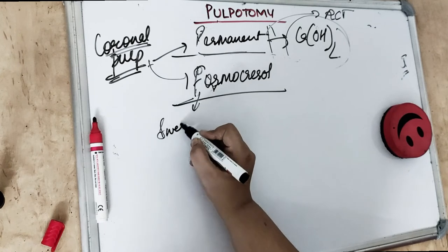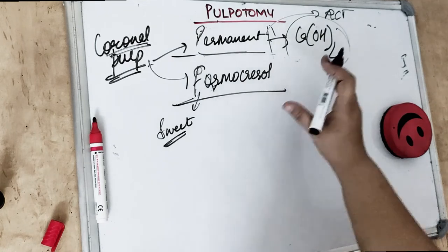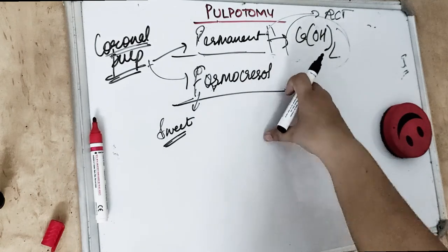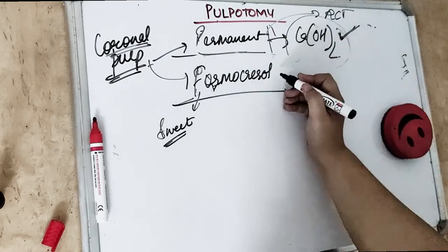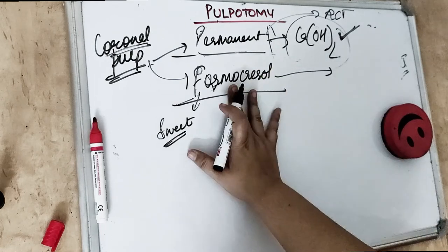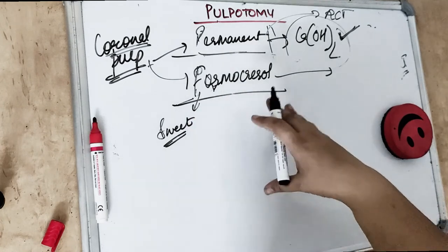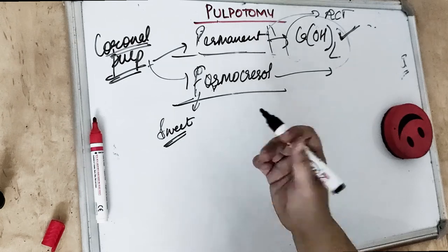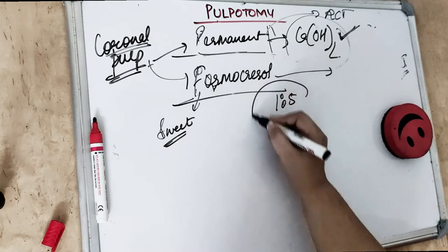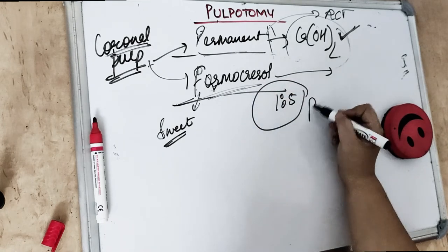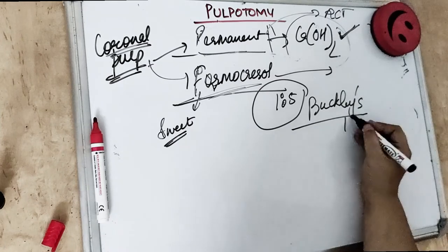Formocresol was introduced by a person named Sweet, who used a multiple-appointment protocol, but nowadays it is used as a single-sitting procedure. It is the material of choice for carious exposure in primary teeth. The mixture is dipped onto a cotton pellet at a 1:5 concentration — known as Buckley's formocresol.